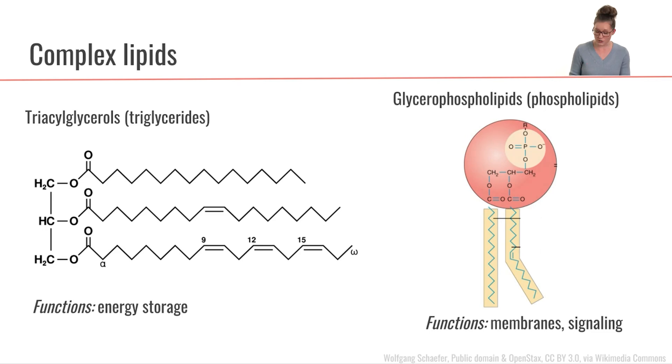And then our second category of complex lipids are the glycerophospholipids, which frequently we will just call phospholipids. Phospholipids have a similar structure in that they also have this three-carbon glycerol backbone, but in the case of phospholipids...